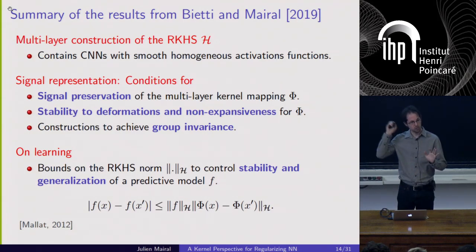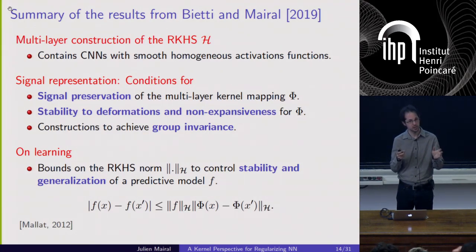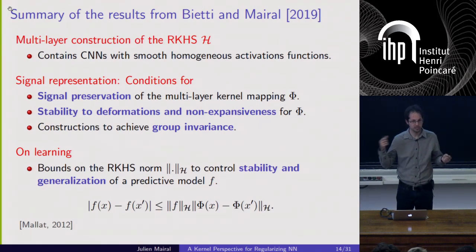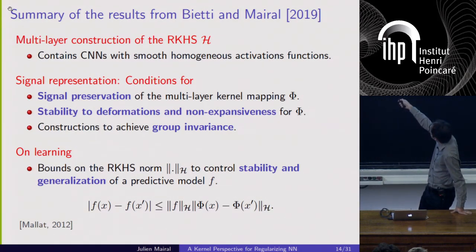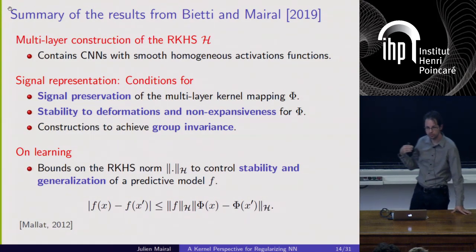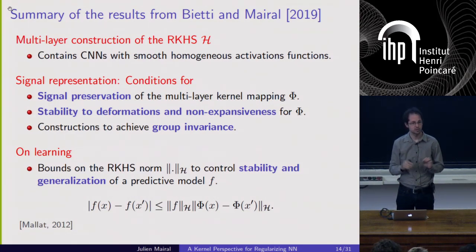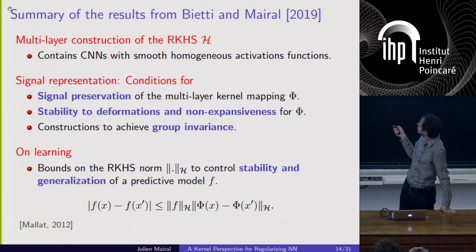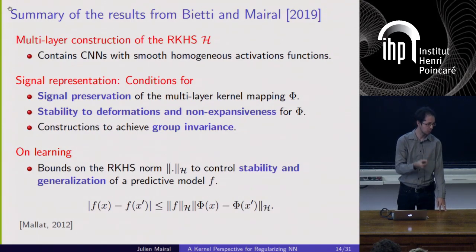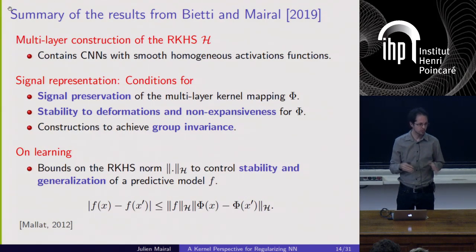On the learning part: if the kernel mapping phi has some stability, to translate that stability to the prediction function f you need to control the norm of f in the RKHS. We compute upper bounds on this quantity to control this norm. Unfortunately, the norm of a deep network is typically intractable in this framework, so we need approximations to get an idea about its magnitude.